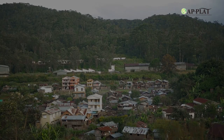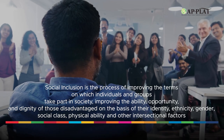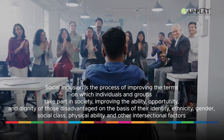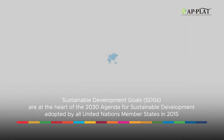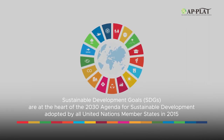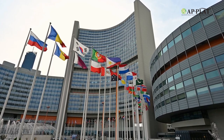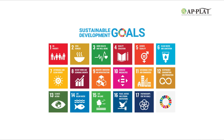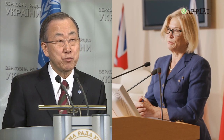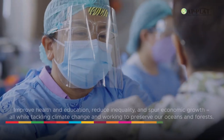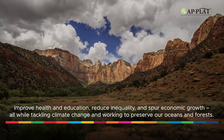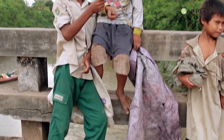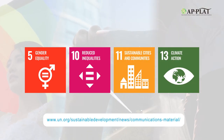This topic will be explored more in Module 2. Social inclusion is the process of improving the terms on which individuals and groups take part in society, improving the ability, opportunity, and dignity of those disadvantaged on the basis of their identity, ethnicity, gender, social class, physical ability, and other intersectional factors. Sustainable Development Goals are at the heart of the 2030 Agenda for Sustainable Development adopted by all United Nations Member States in 2015, which provides a blueprint for peace and prosperity for people and the planet, now and into the future. The 17 SDGs are an urgent call for action by all countries, developed and developing, in a global partnership. They recognize that ending poverty and other deprivations must go hand in hand with strategies that improve health and education, reduce inequality, and spur economic growth, all while tackling climate change and working to preserve our oceans and forests. All people-centered SDGs are relevant to this course, but the major ones are SDGs 5, 10, 11, and 13. The figures below are from the UN SDG website.